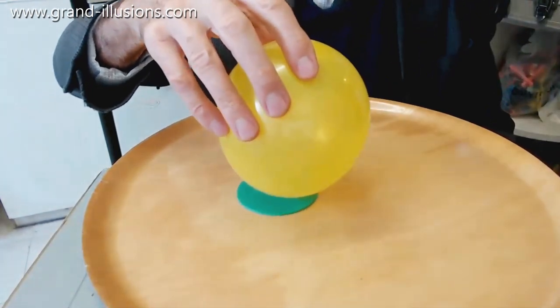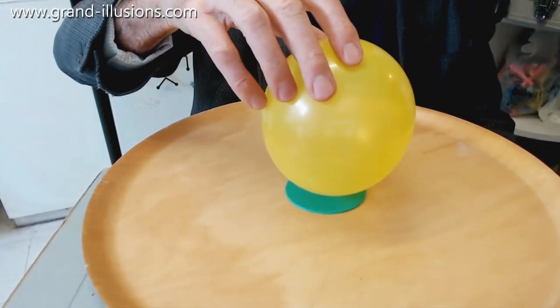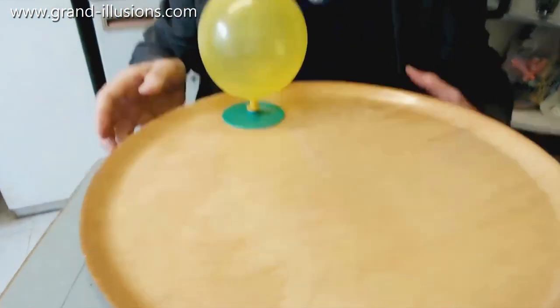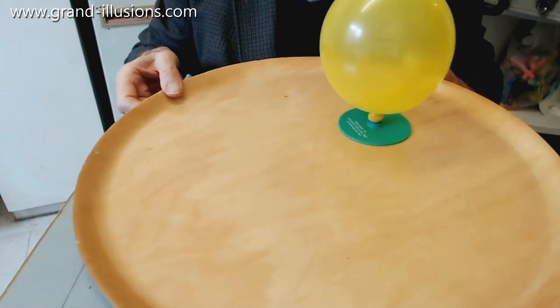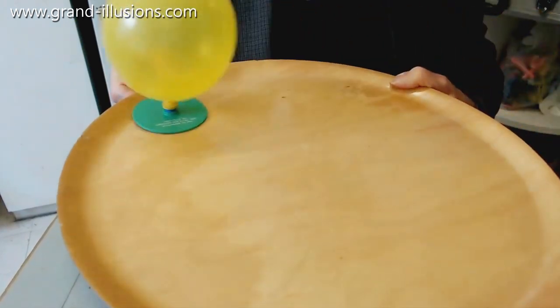It won't float yet because it's still twisted, so to untwist it I just let go. And wow, let's have an idea of making it move around the table. Look at that, very fluid movement, absolutely superb, almost frictionless.